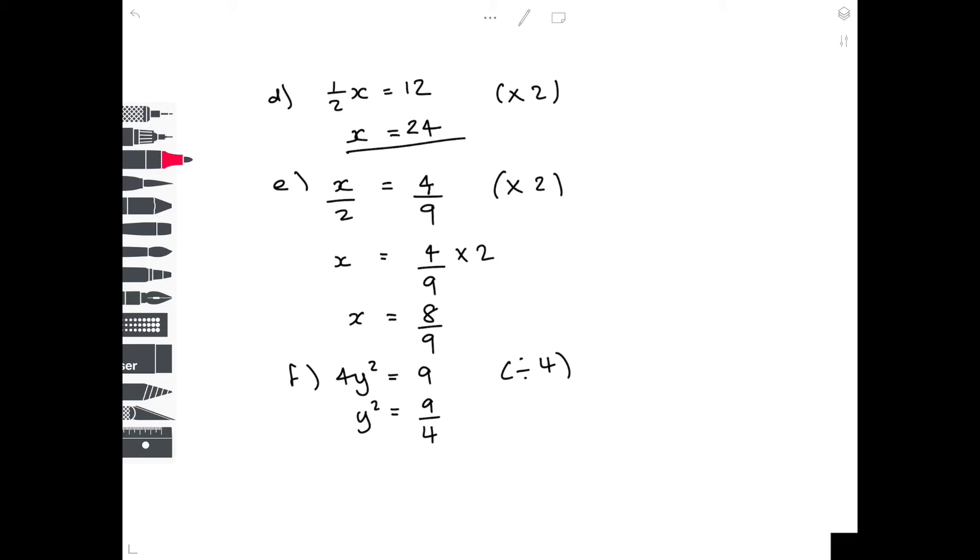What is the opposite of squaring? Well, it is square rooting. So to get y by itself, you need to square root both sides. So y squared square rooted is just y. Let's square root 9 and 4. So square root of 9 is 3. The square root of 4 is 2. So y equals 3 over 2. Now be aware when you're square rooting that there are two possible answers. Don't forget to include the minus answer. Because remember, if you multiply two minus signs together, you get a positive answer.